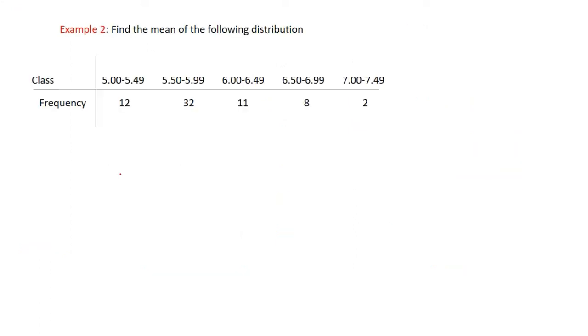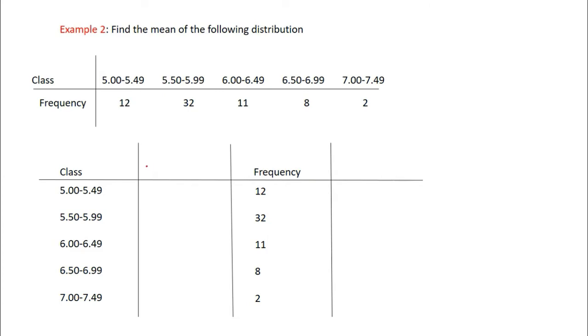So say now we have a class, so we want to find the mean of this class having frequency distribution given below. So what we're going to do is we're going to set out a table of class and frequency, then we're going to find the midpoint of these classes and that will be our x values.